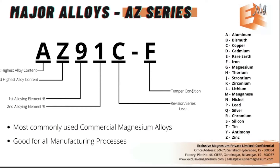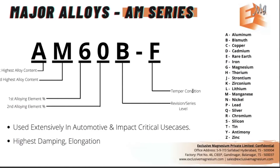The AZ series is the most commercially used magnesium alloy in India and globally, used across almost every industry. You would first consider AZ91 before moving to others. The second major series is the AM series — aluminium-manganese — which is extensively used in automotive and impact-critical use cases, such as helmets and steering wheels. This series has very high damping capability: shock absorption, vibration damping, and dent resistance.